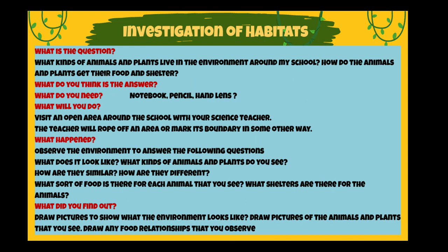Here is an investigation that you have to conduct. The question is: what kinds of animals and plants live in the environment around your school? How do the animals and plants get their food and shelter? Think of your answer and write it down — that becomes your hypothesis or expected answer. For the experiment you need a notebook, a pencil, and a hand lens.